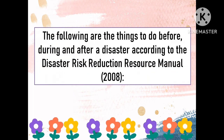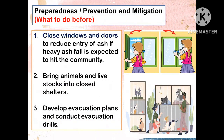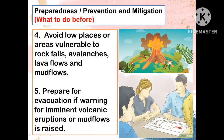The following are the things to do before, during, and after a disaster, according to the Disaster Risk Reduction Resource Manual. What to do before a volcanic eruption: First, close the windows and doors to reduce entry of ash if heavy ash fall is expected to hit the community. Second, bring animals and livestock into closed shelters. Third, develop evacuation plans and conduct evacuation drills. Also, avoid low places or areas vulnerable to rock falls, avalanches, lava flows, and mud flows.